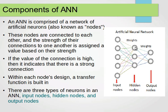Remember, in the normal standard perceptron we have the threshold. In the MLP we had the sigmoid transfer function. So we have three types of neurons in the artificial neural network: the input nodes, the hidden nodes, and the output nodes — similar to what we studied in the MLP.